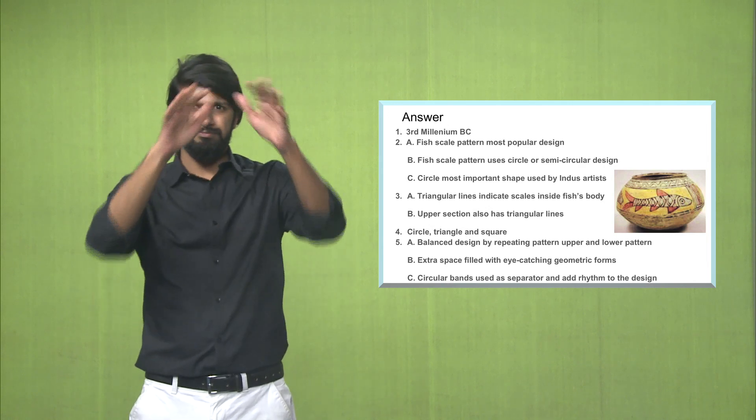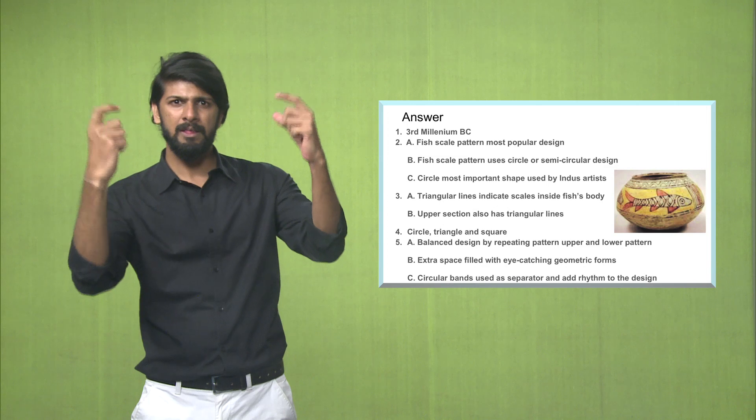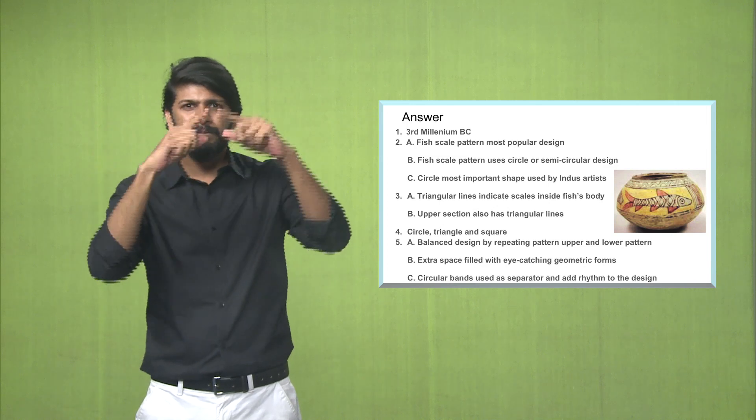Answer number three, point A, the triangular lines indicate scales inside the fish's body.